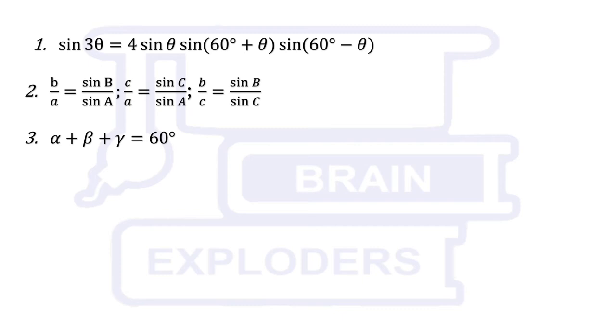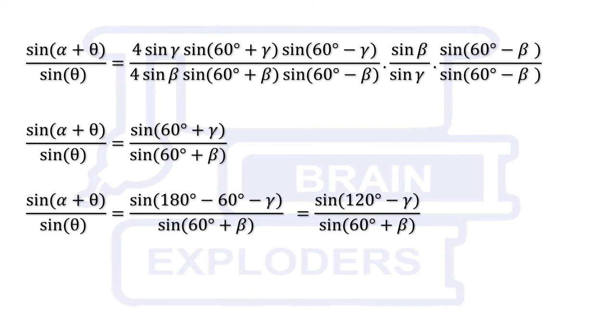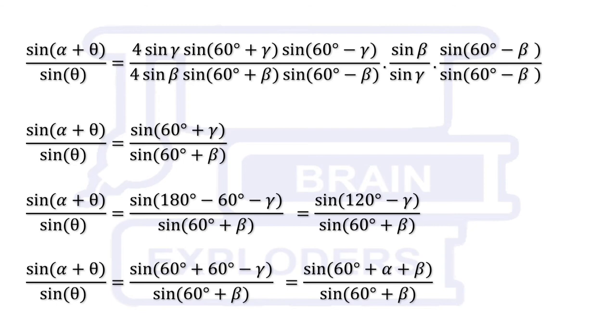After this step, we have to use other two identities. Since alpha plus beta plus gamma equals 60 degrees, therefore alpha plus beta and alpha plus gamma are 60 minus gamma and 60 minus beta respectively. On putting these values, we find that many of the elements can be cancelled here. After this, there are different approaches to solve the problem.